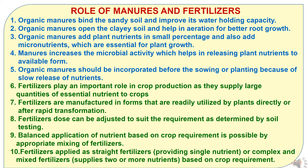Seventh, fertilizers are manufactured in forms that are readily utilized by plants directly or after rapid transformation. Eighth, fertilizers can be adjusted to suit the requirement as determined by soil testing. Ninth, balanced application of nutrients based on crop requirement is possible by appropriate mixing of fertilizers. And tenth, fertilizers can be applied as straight fertilizers providing single nutrients, or as complex and mixed fertilizers based on crop requirement.